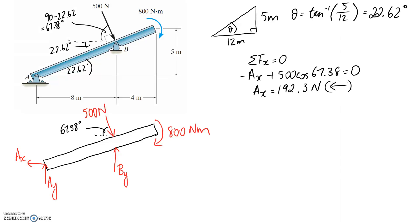It came out as a positive value which tells us we have the correct direction in the diagram, so it is back to the left. We have two other equilibrium equations. If you try to sum forces in the y direction, you end up with two unknowns, so you need to apply the sum of moments equation. Remember, for your sum of moments equation you're able to pick what point you sum about. If you pick point A, where both Ax and Ay act, you're going to eliminate those unknowns. I'm going to sum about point A.